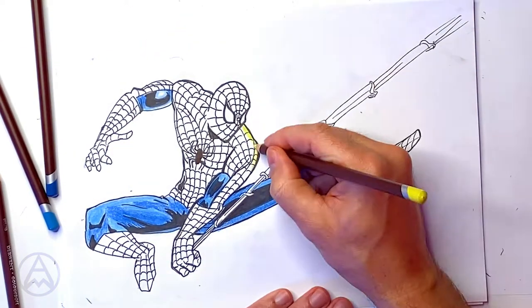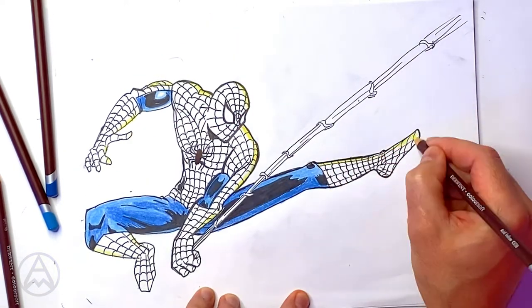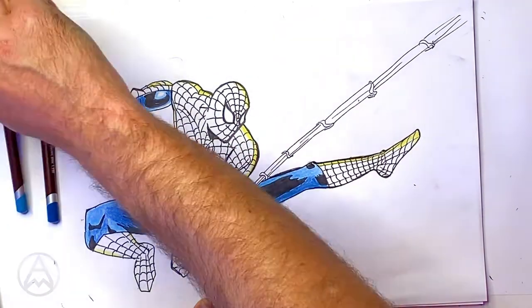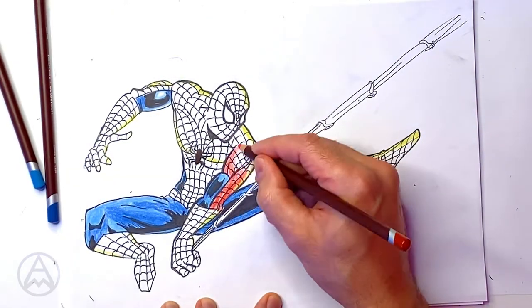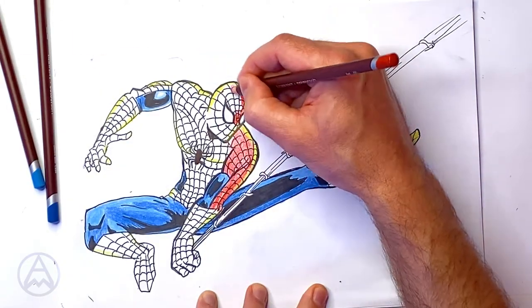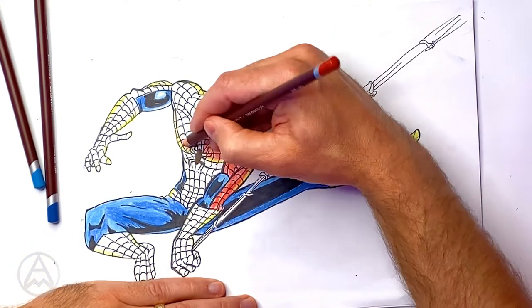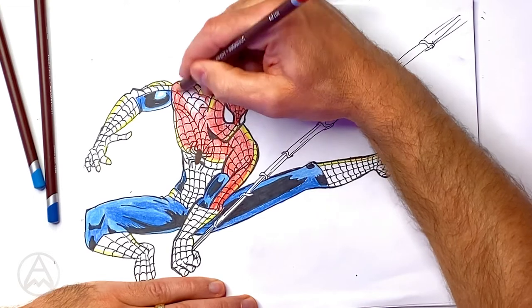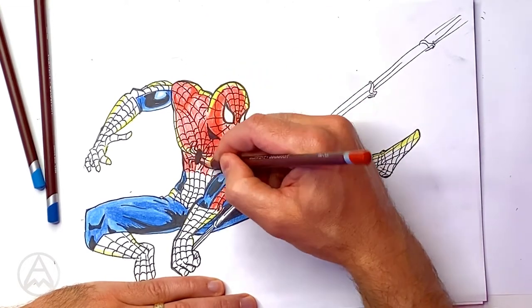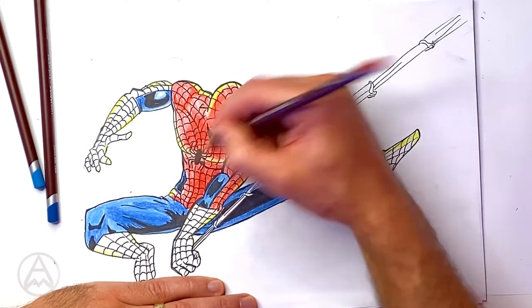So now what I'm doing is I'm putting down a yellow for the lighter part of the red. And I know you're thinking, but Spider-Man's not yellow. No, he's not. But light red is pink. And it just doesn't look good when you're trying to color in Spider-Man to have a pink edge. So you put in a bit of yellow. It's a nice highlight color that complements the red. And it works as you can see as I fill in the red. Now what I'm doing here is I'm filling in a general red all over. And then in the parts, like I said, that I want in shadow, I go over a bit heavier. As you've seen there.